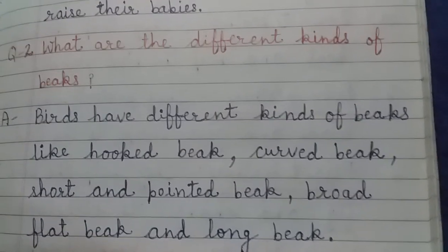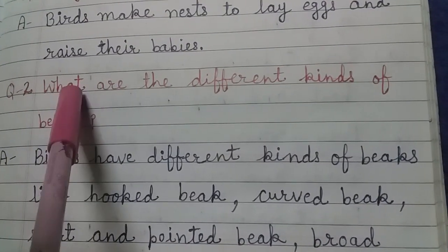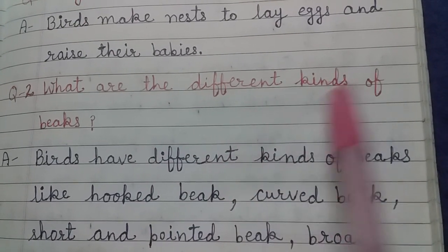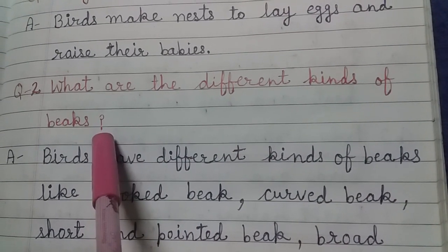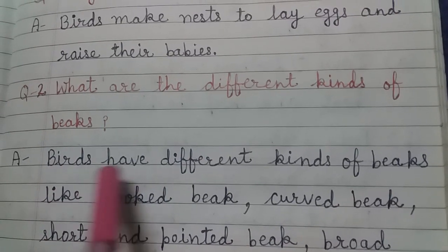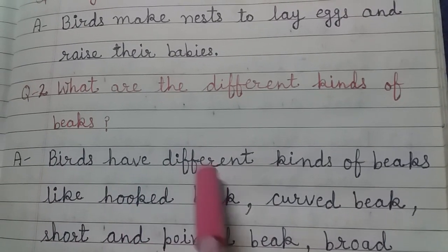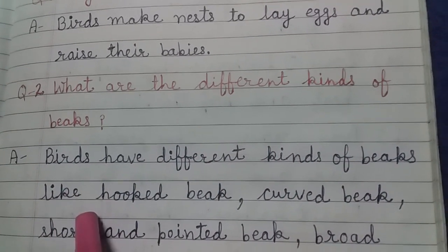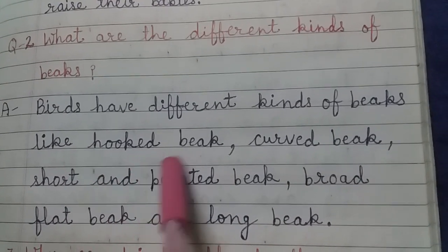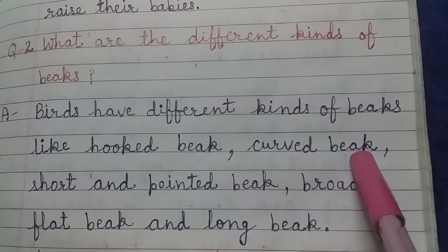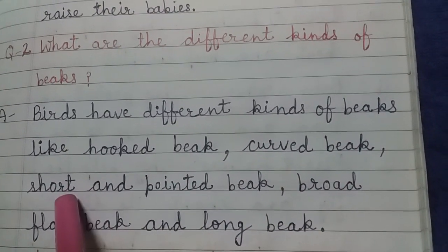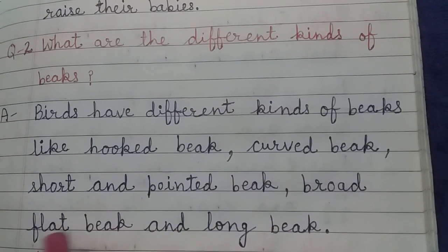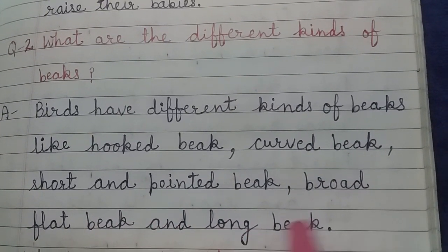Let's read this question again. What are the different kinds of beaks? Answer is: birds have different kinds of beaks like hooked beak, curved beak, short and pointed beak, broad flat beak, and long beak.